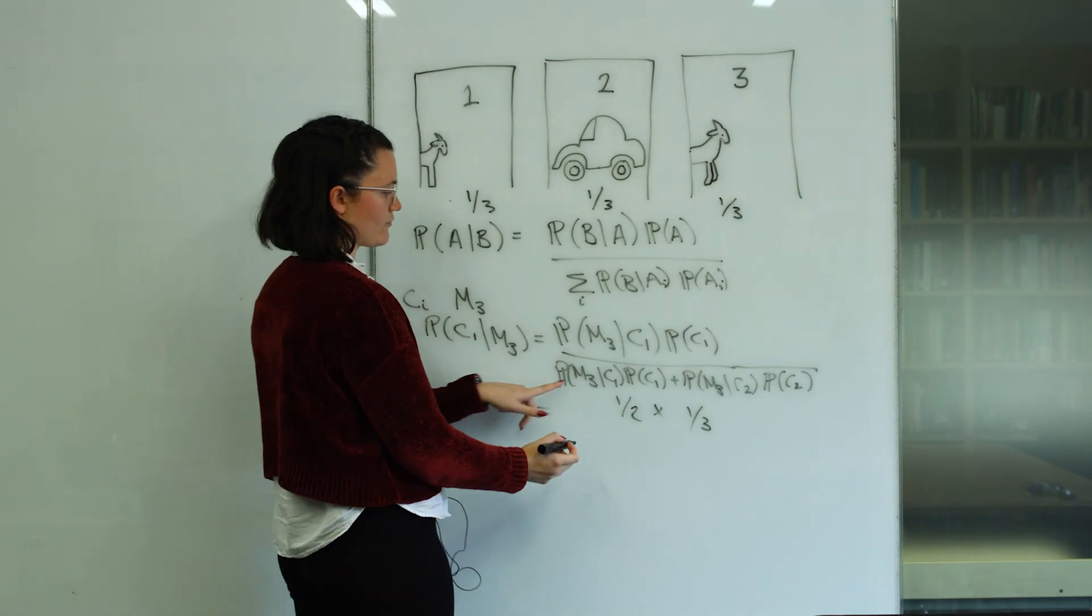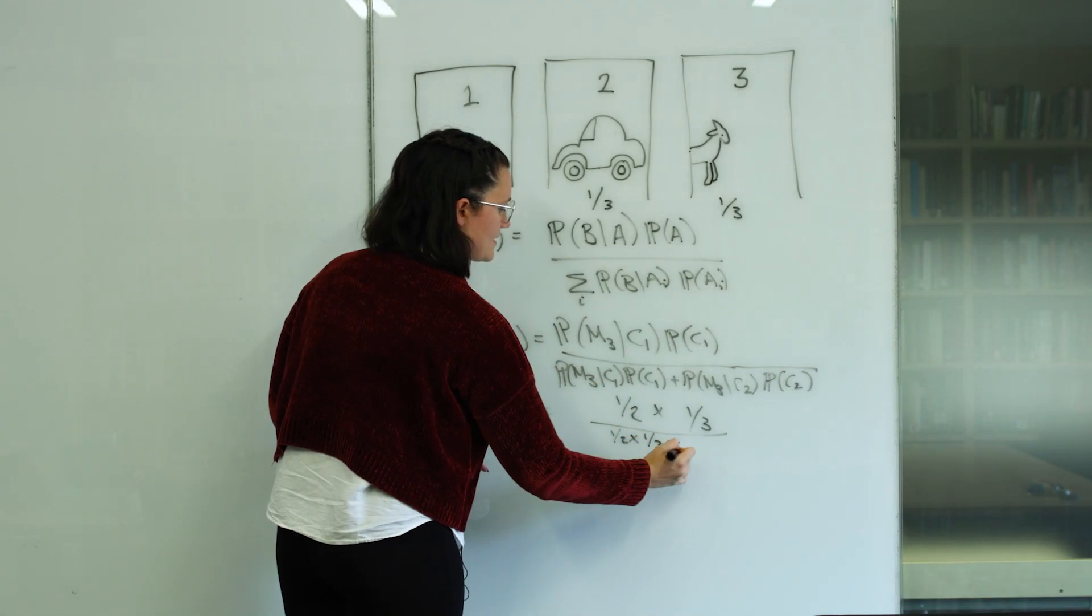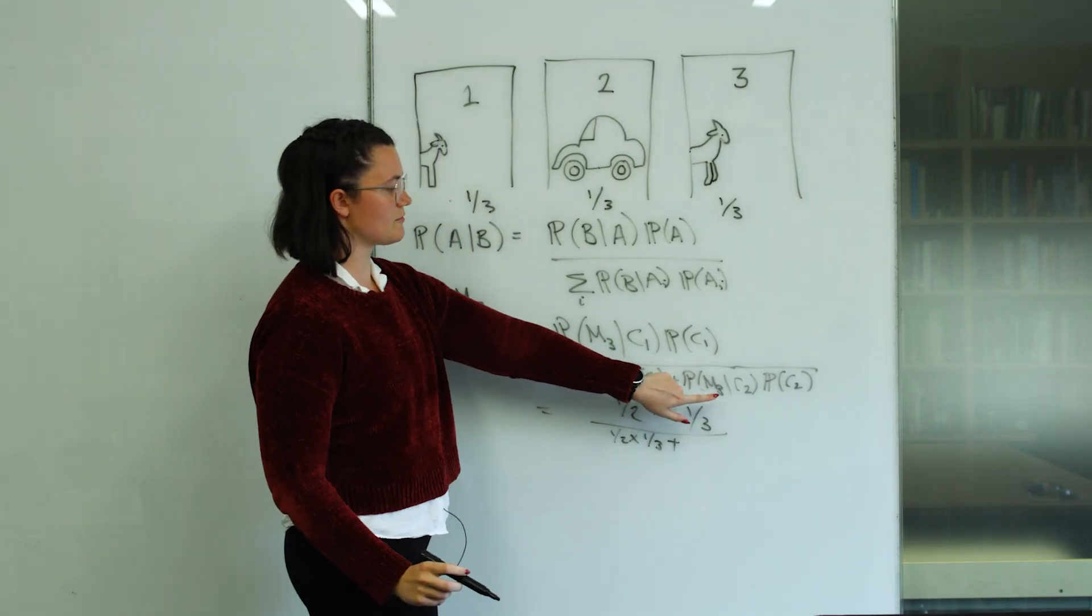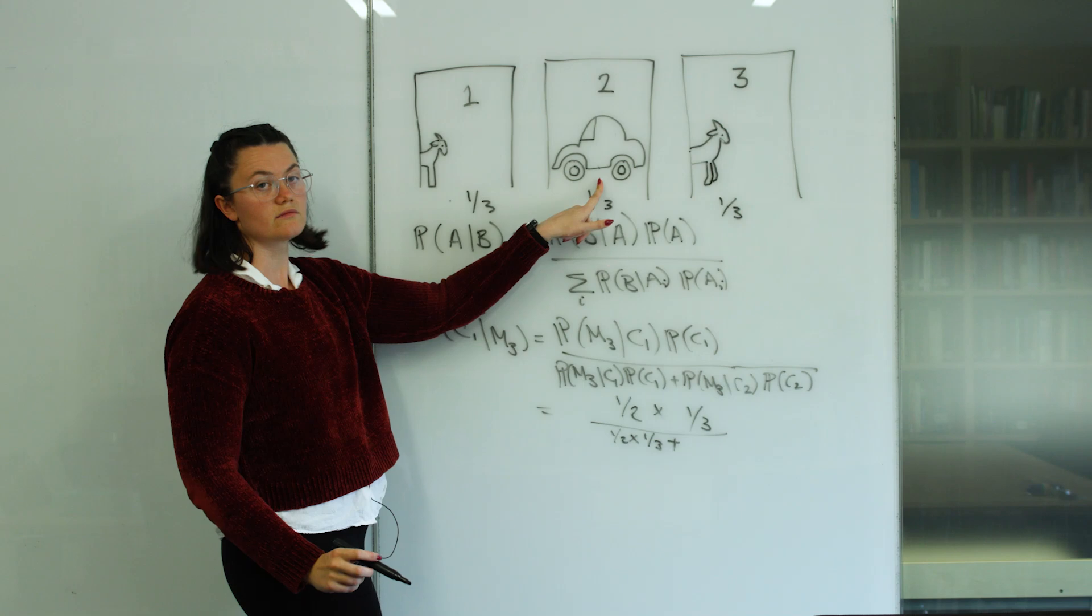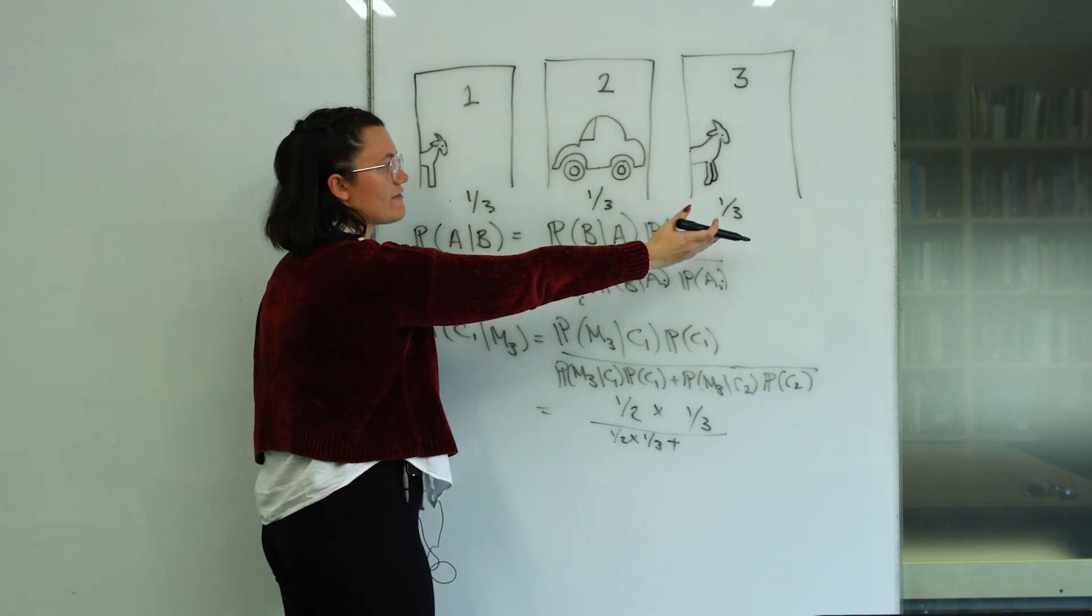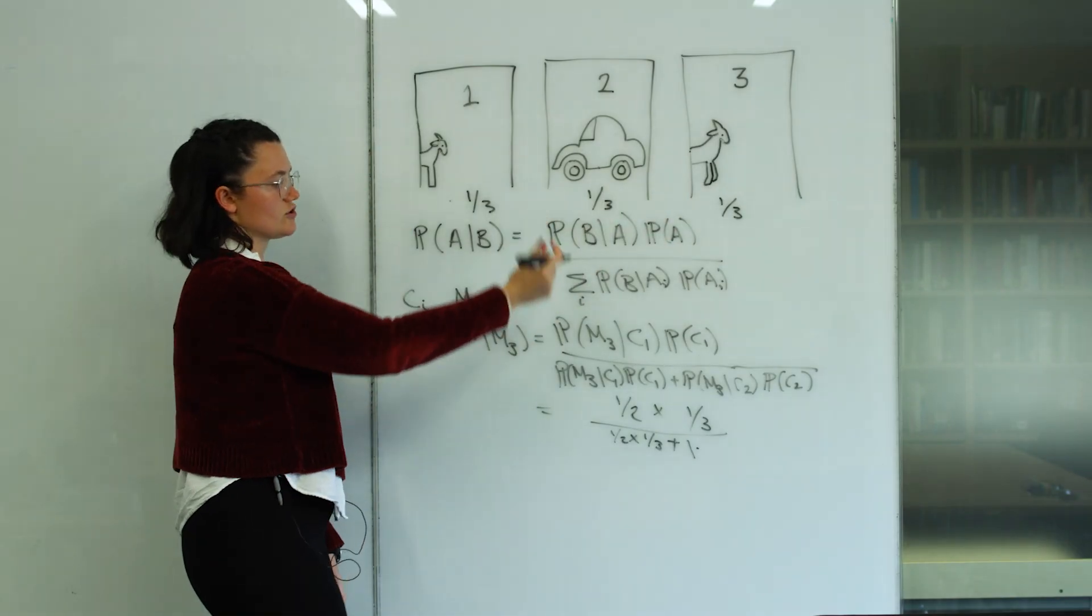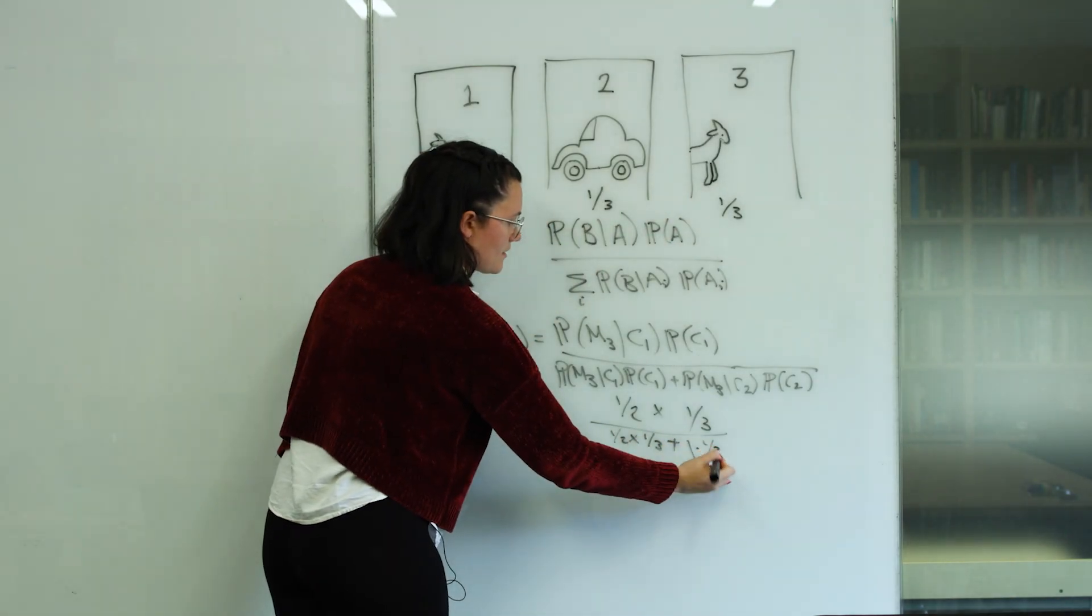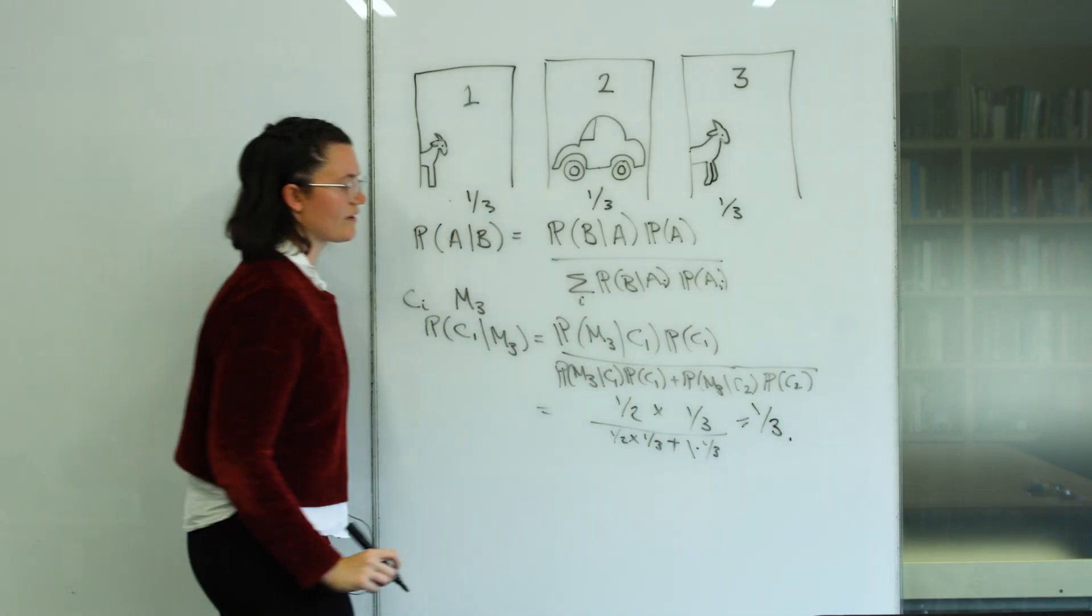Now on the bottom, we've got the same thing again. So a half times a third. But now we have to add the probability that Monty opens door three, given that the car is behind door two. In this case, he's always going to open door three, right? He has to show you a goat. So that's one times the probability that the car is behind door two, again, a third. And if you work this out, this is going to be equal to one third.